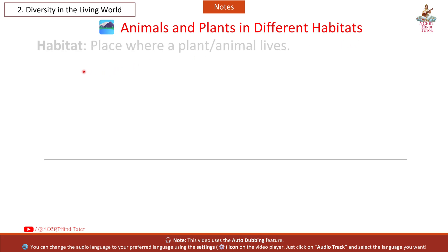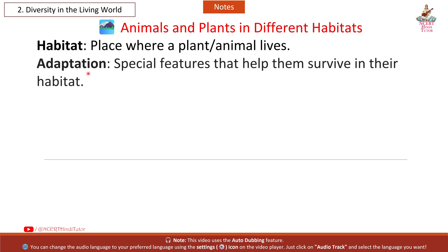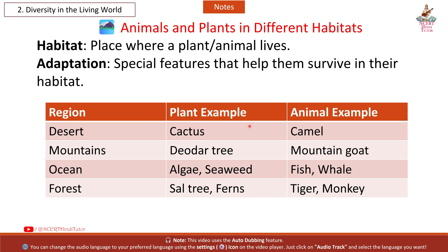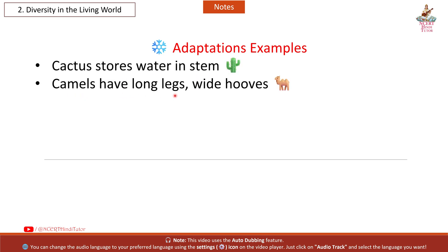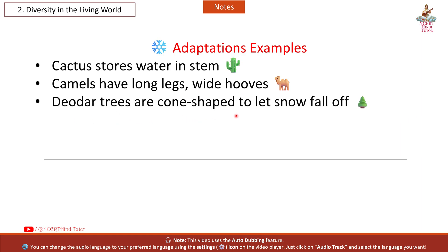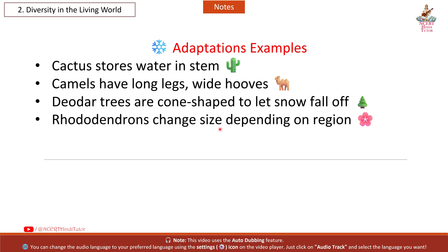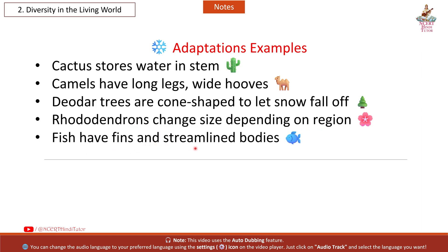Animals and Plants in Different Habitats: Habitat is the place where a plant or animal lives. Adaptation refers to special features that help them survive in their habitat. Desert — plant: cactus, animal: camel. Mountains — plant: deoda tree, animal: mountain goat. Ocean — plant: algae, seaweed, animal: fish, whale. Forest — plant: sal tree, ferns, animal: tiger, monkey. Adaptation examples: cactus stores water in its stem; camels have long legs and wide hooves; deoda trees are cone-shaped to let snow fall off; rhododendrons change size depending on region; fish have fins and streamlined bodies.